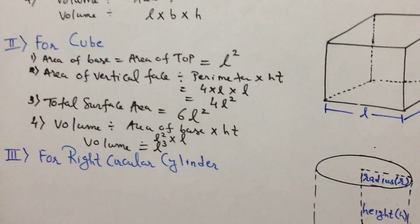Let's refresh all formulas for a cube: area of base equals area of top equals L². Area of vertical faces is 4L², derived using two methods. Total surface area is 6L². Finally, volume is L³.